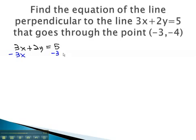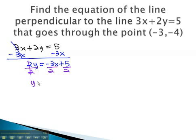Start finding the slope by solving for y. Subtract 3x from both sides, and 2y equals negative 3x plus 5. Get the y alone by dividing each term by 2, and y equals negative 3 halves x plus 5 halves.